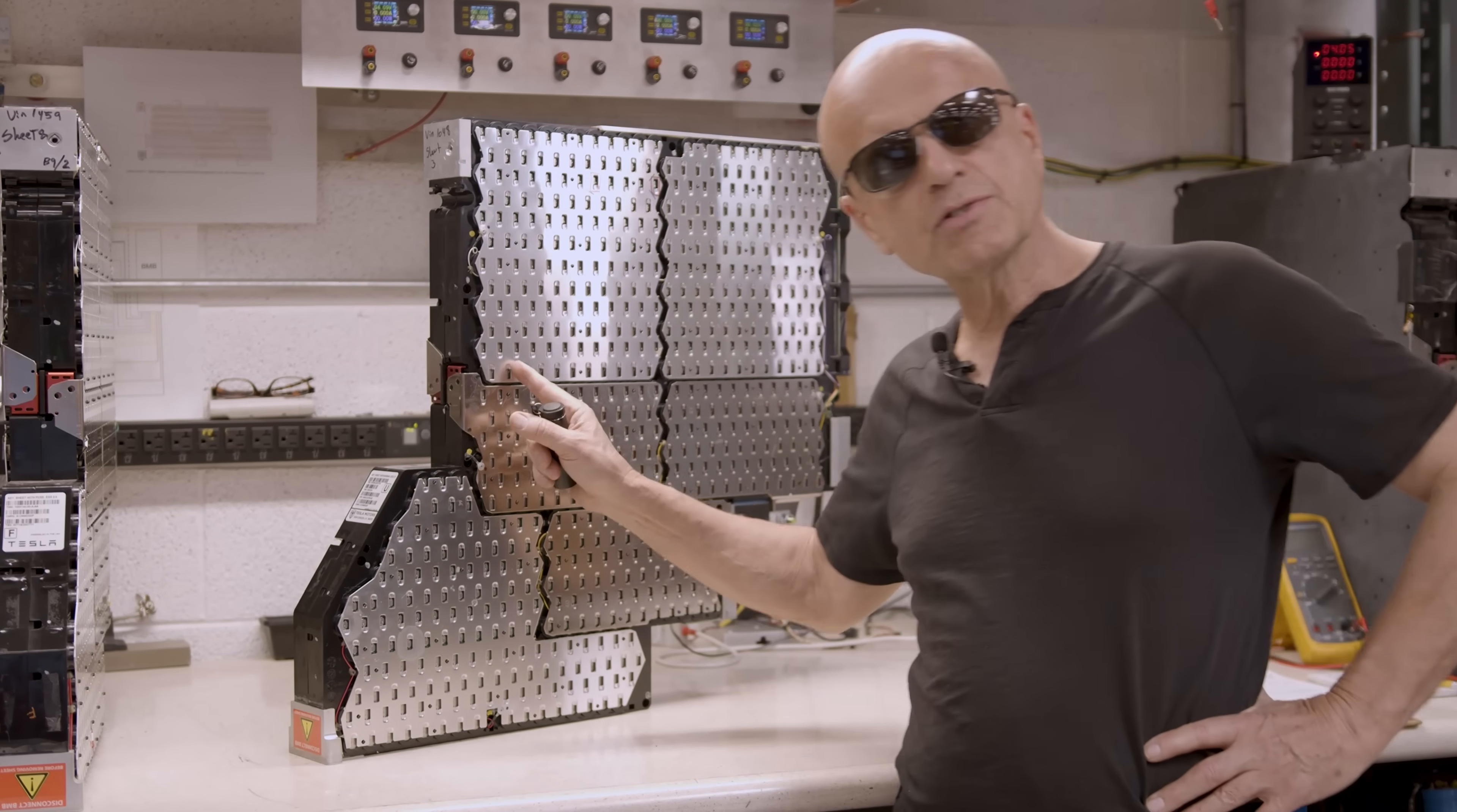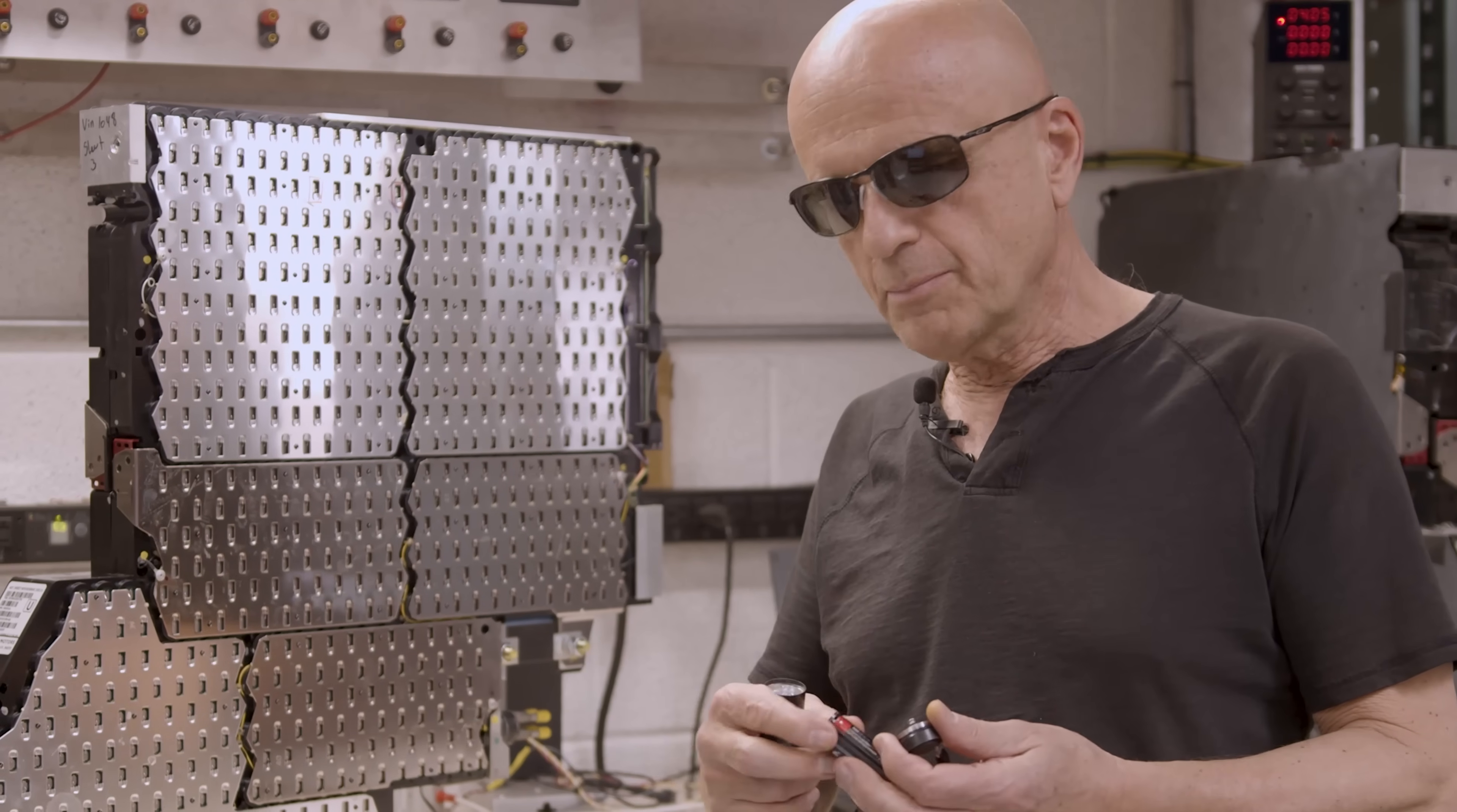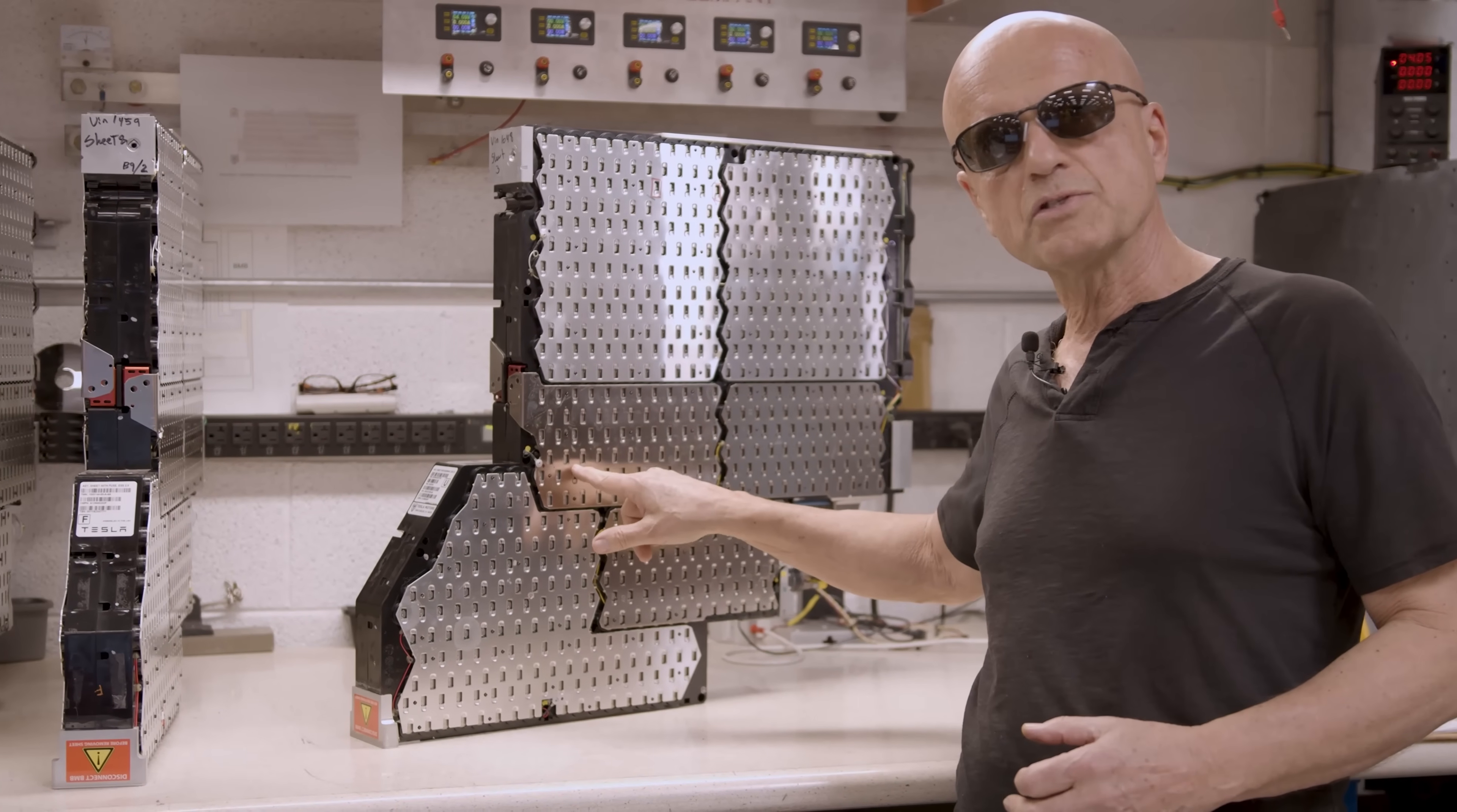Now cells in these sheets at times go bad. They become resistive and parasitic and they pull down the voltage in a brick. Now wouldn't it be nice if we were able to change these cells like in a flashlight, where you just simply open it up, take your old cells out and throw them away. In this Roadster sheet, because of the amount of thermal potting compound and adhesives, there is no effective way to remove one of these cells.